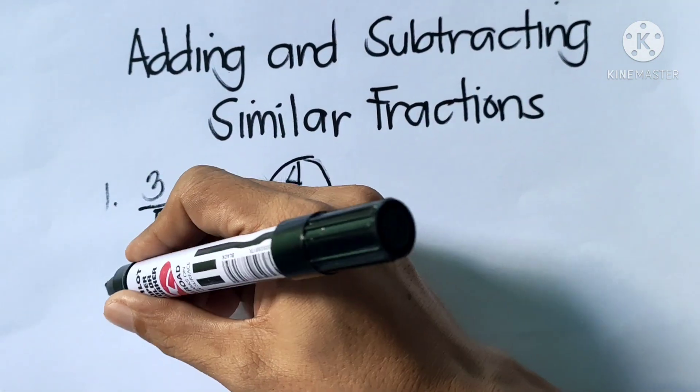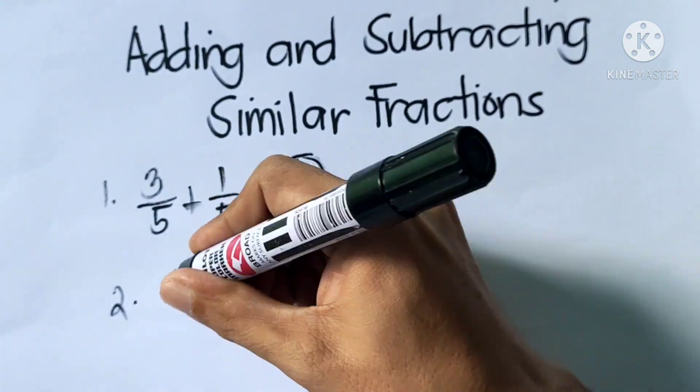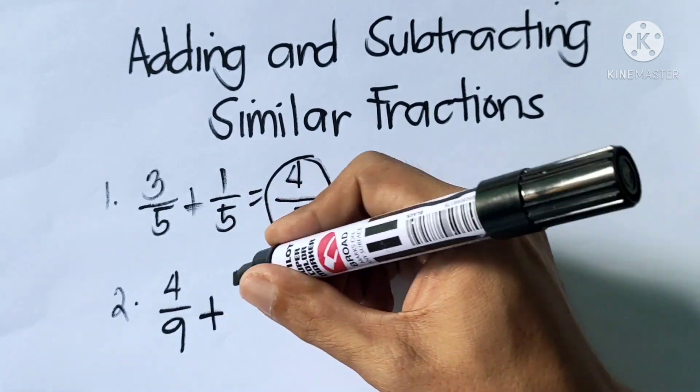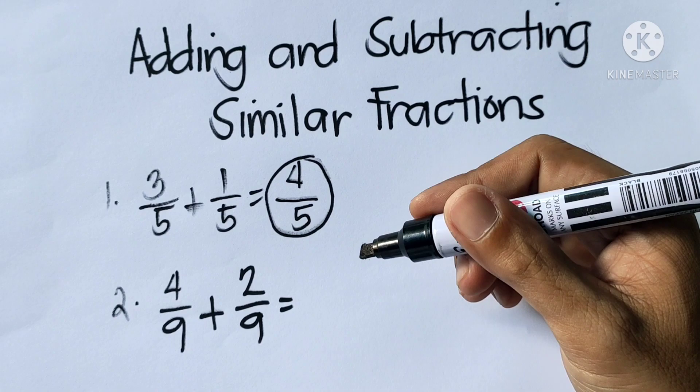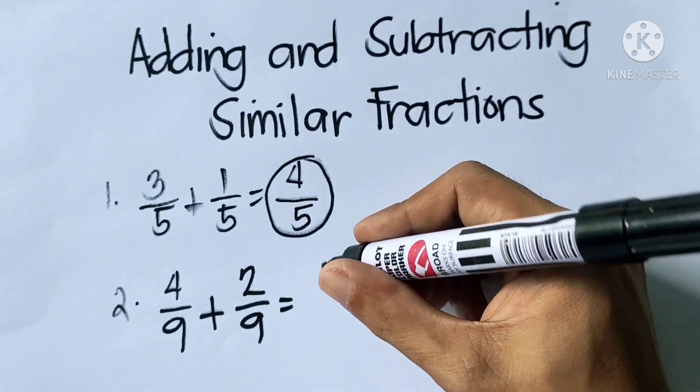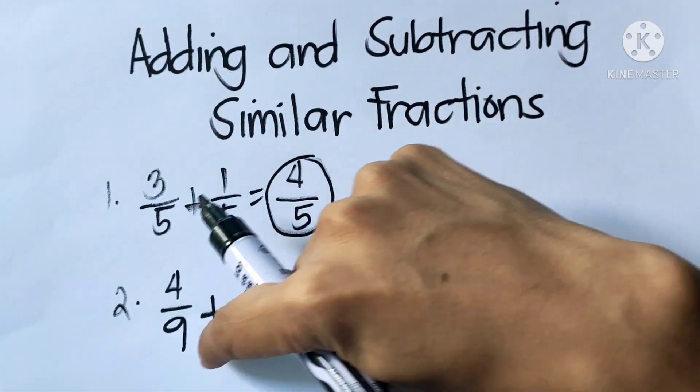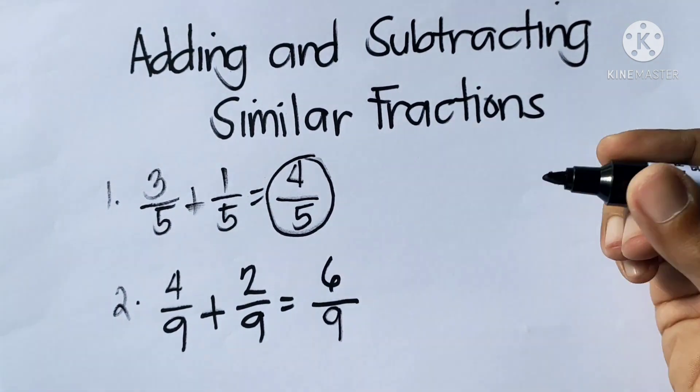Example number 2: 4 ninths plus 2 ninths. We're going to add the numerators. So 4 plus 2 is 6. Then copy the common denominator, which is 9. So 6 over 9.